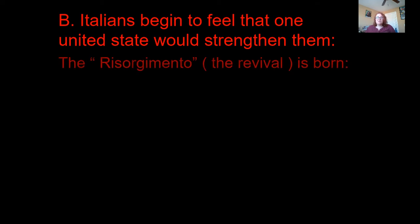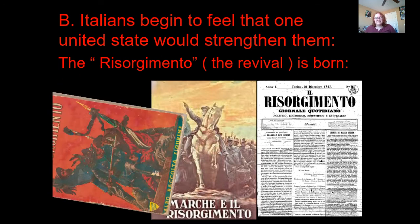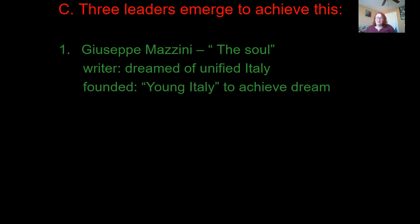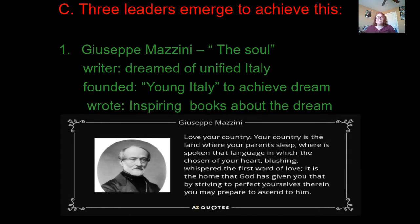After the fall of the Roman Empire, Italy was made up of many independent city-states — each individual territory was governed by themselves, with their own flags and their own ability to govern. Italians would begin to feel that one united state would strengthen them, and so the idea of the Risorgimento, which means revival, was born — basically the revival of Italy, putting people back together. Three leaders emerged to achieve this. Giuseppe Mazzini was a writer who dreamt and wrote about a unified Italy, and he founded an organization called Young Italy in order to achieve the unification dream.